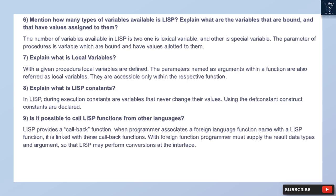Question 9: Is it possible to call Lisp functions from other languages? Lisp provides a callback function. When a programmer associates a foreign language function name with a Lisp function, it is linked with these callback functions. With a foreign function, the programmer must supply the result data types and arguments so that Lisp may perform conversions at the interface.